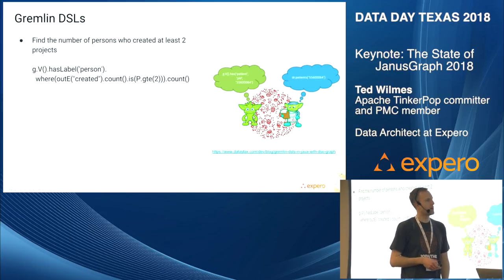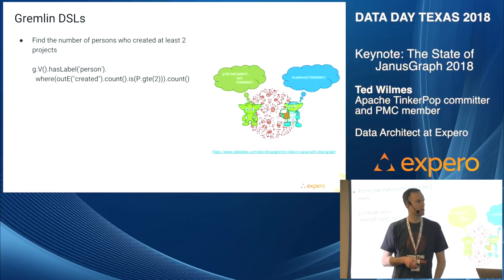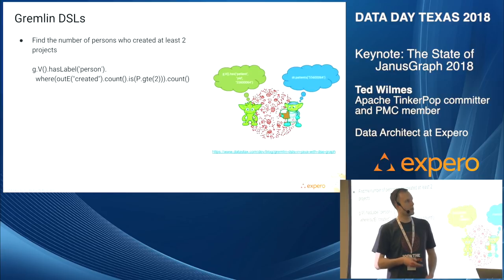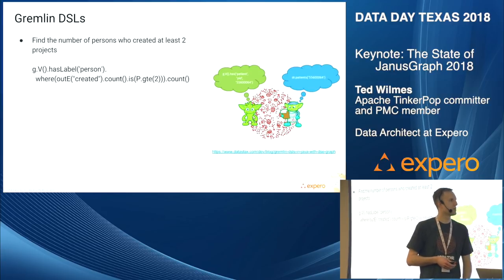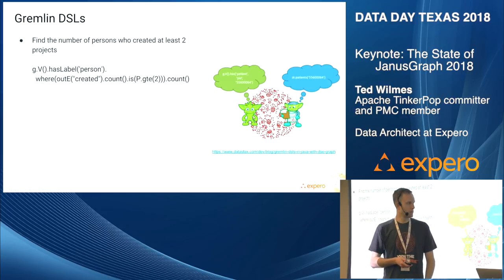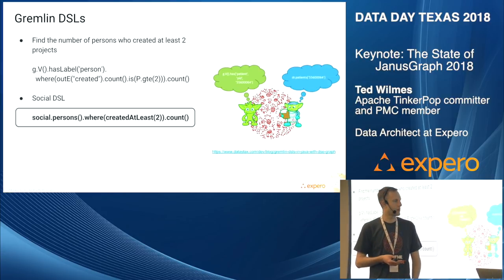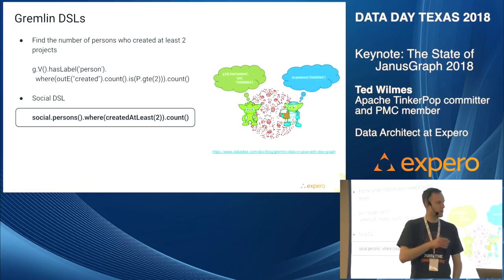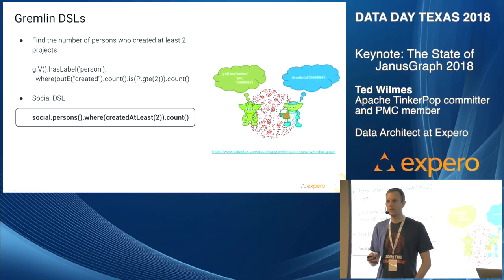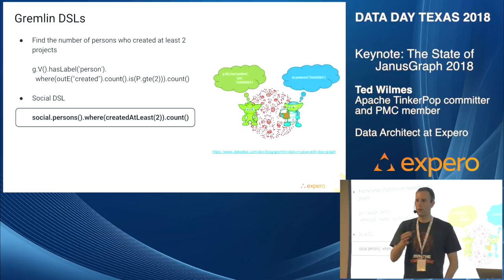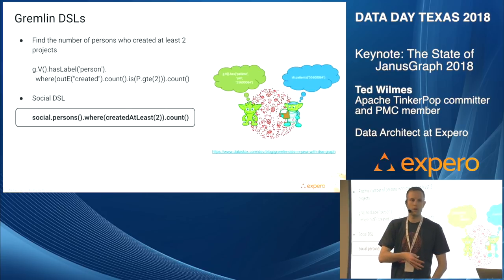Then we have Gremlin DSLs. Users showed a lot of interest in the ability to come up with their own graph DSLs that get turned into Gremlin behind the scenes. Here's a simple example: find the number of persons who created at least two projects. You might want to create a social DSL — if you're building a social networking application, TinkerPop makes it incredibly easy to put together your own client DSL using actual domain language in the query. If you have users who may not be developers, you can make something comfortable to them.